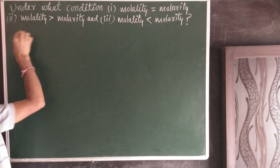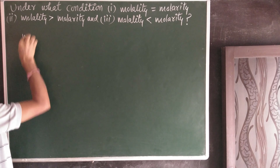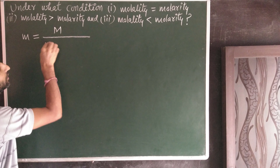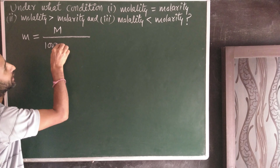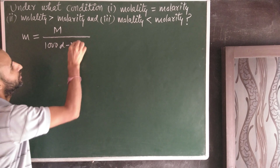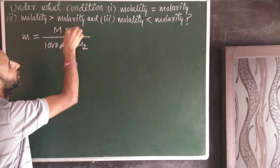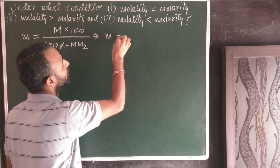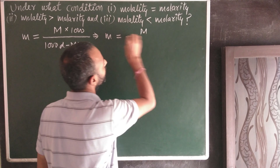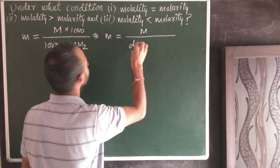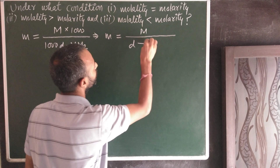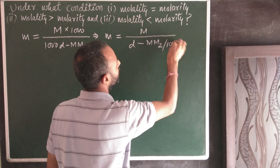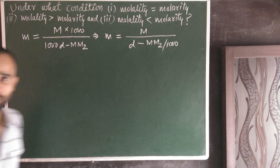The relation is: molality is equal to molarity divided by (1000·D − M·M₂) × 1000, or equivalently, molality equals molarity divided by (D − M·M₂/1000). This is the relation.